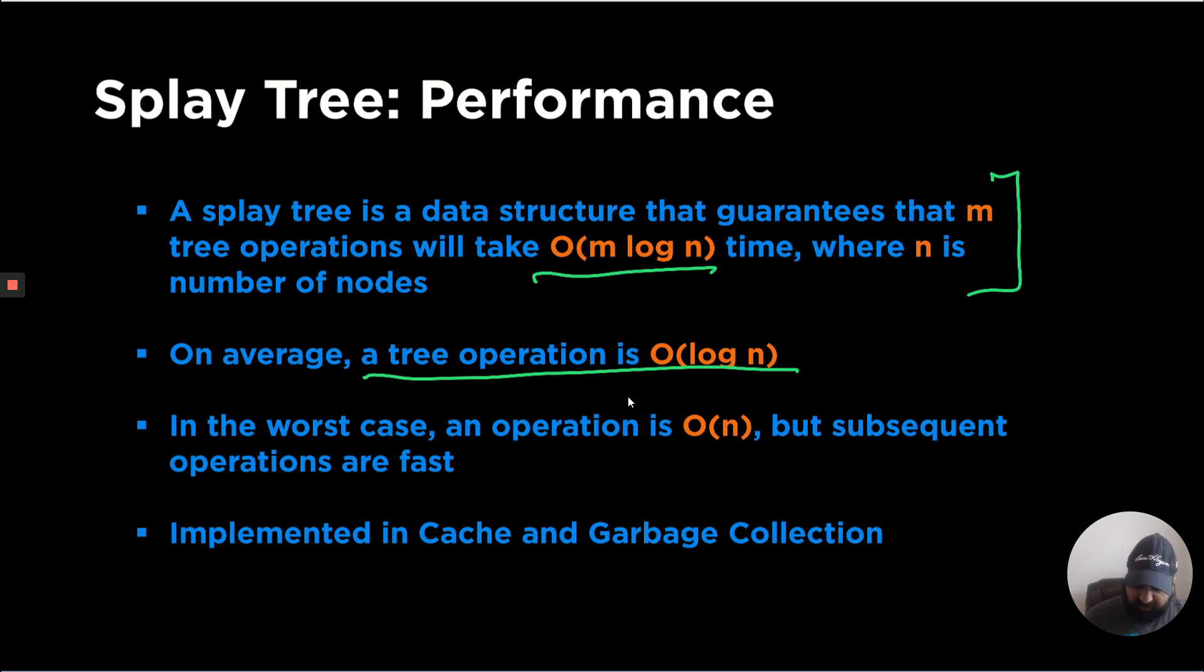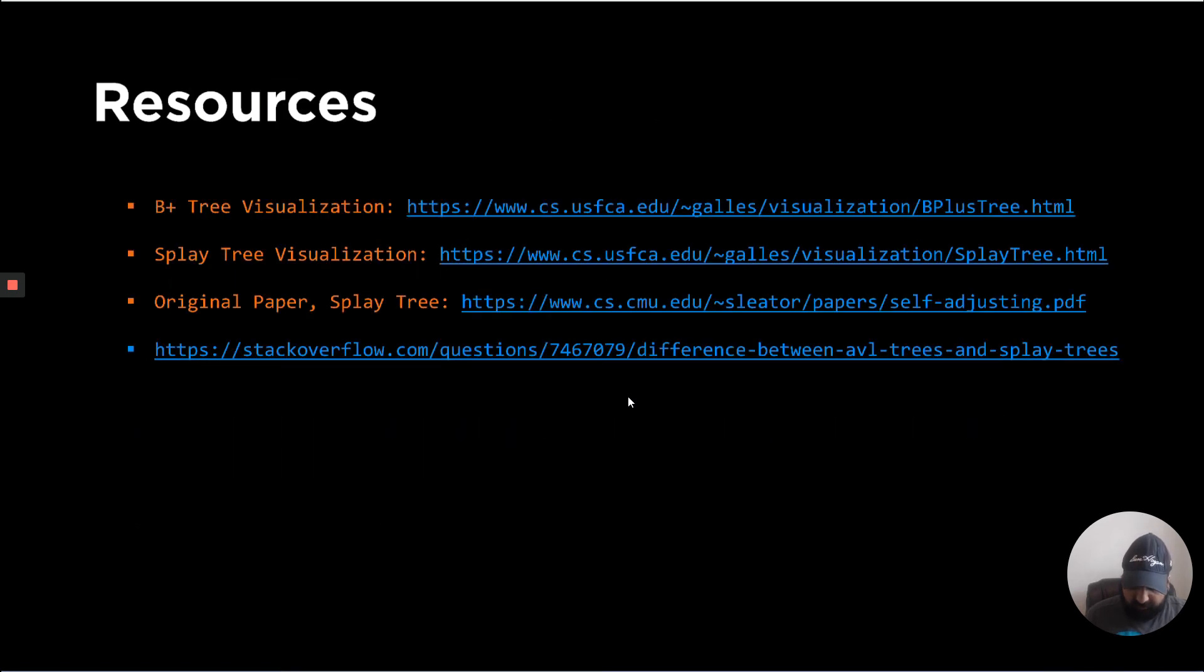But let's say if we were to design a system like cache where we are trying to access recently inserted elements or recently searched elements closer, then this data structure makes more sense because it has a specific use case. So it's implemented in cache as well as in garbage collection. There are some more resources, you can try out the B plus trees visualizations, splay visualization, and there's the original paper on splay trees and B plus trees that's also available under the resources.